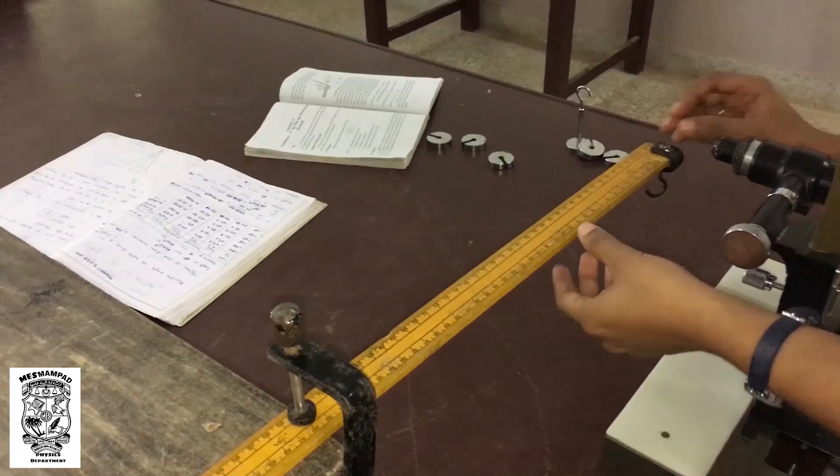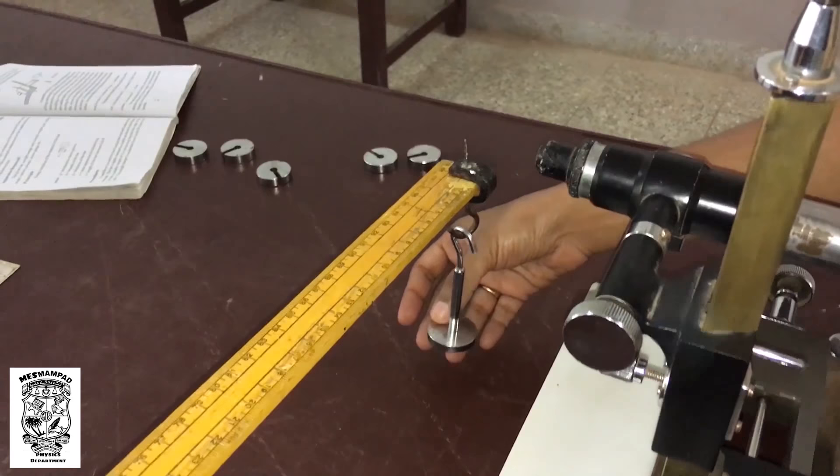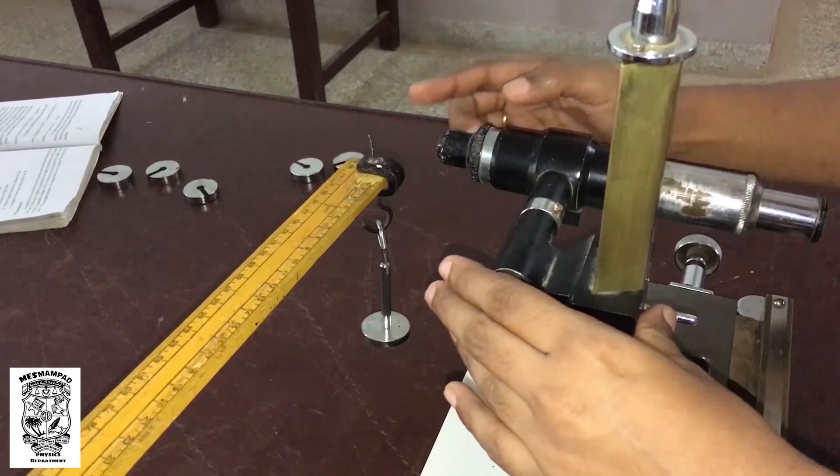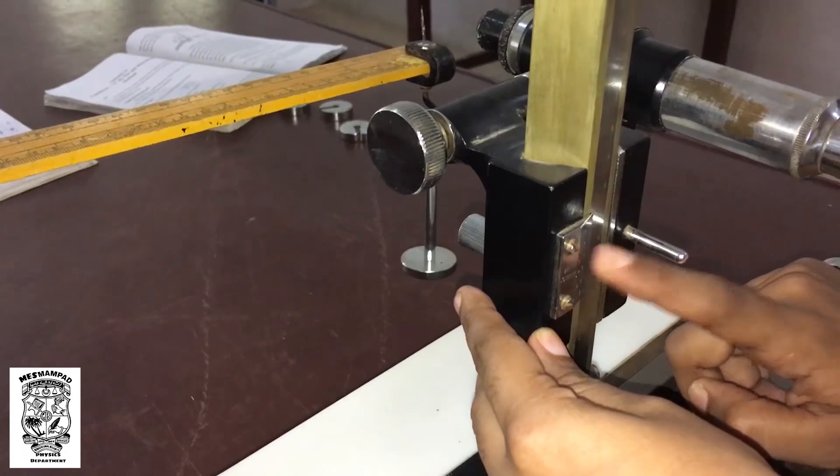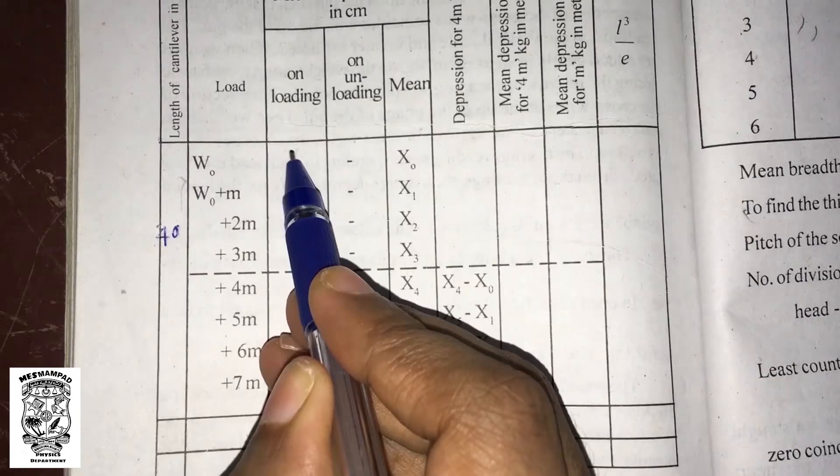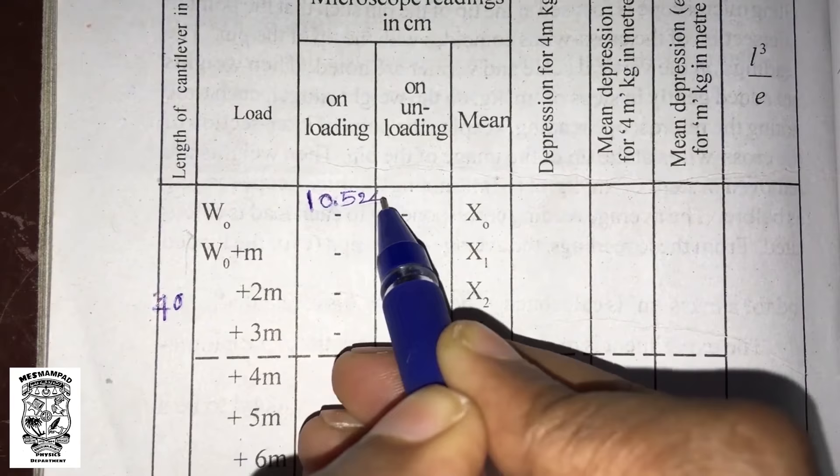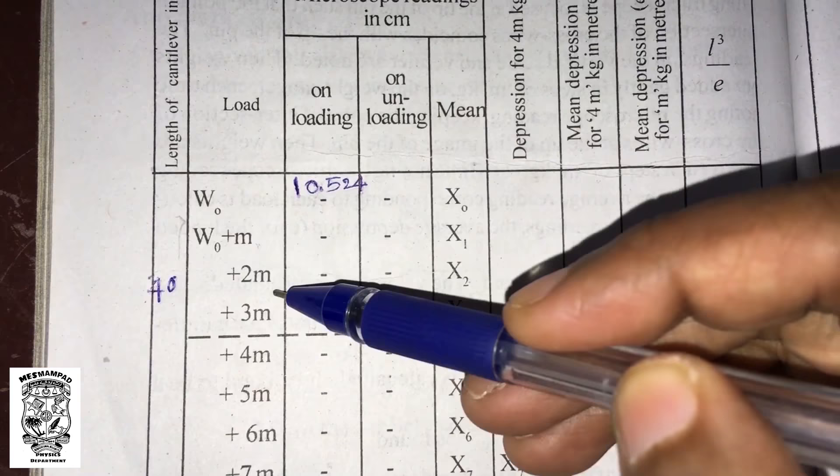This is the free end where we have a needle placed. So, that is 40 centimeters with 50 grams, that is W0, dead load method. Using a traveling microscope, we need to focus to take the initial reading. This is the same experiment using W0.